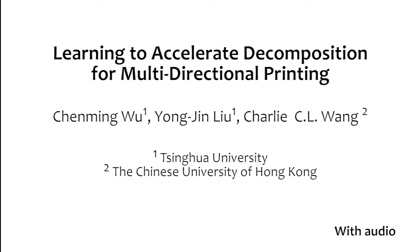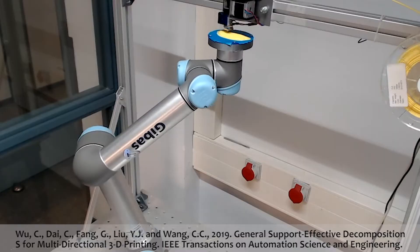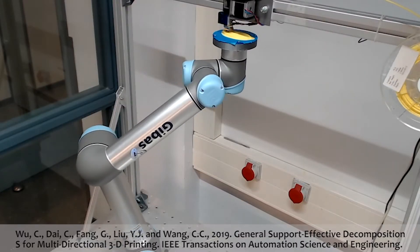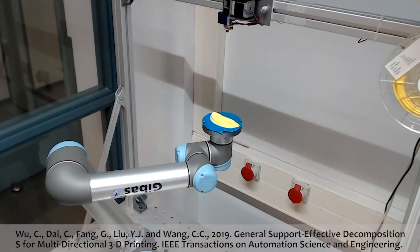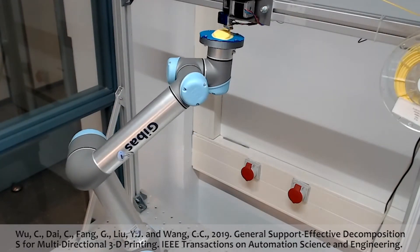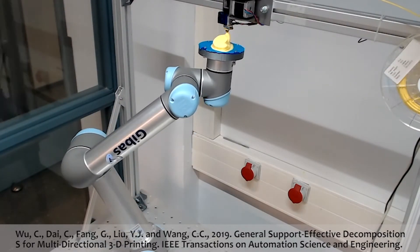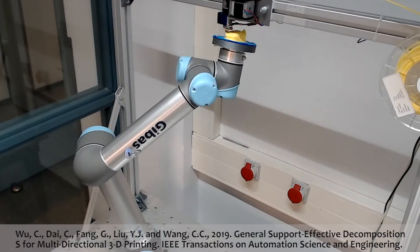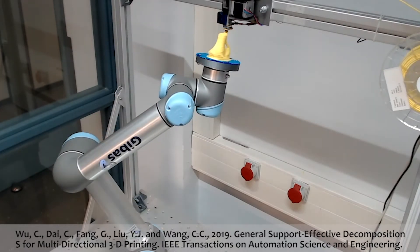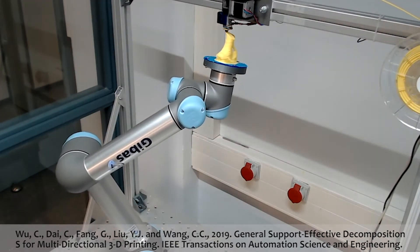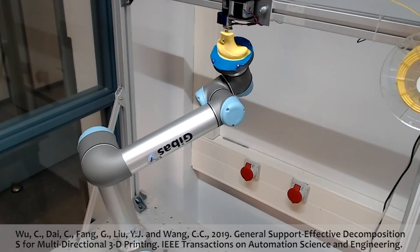In this paper, we present a learning framework to accelerate decomposition for multi-directional printing. As a strong complementary of additive manufacturing, multi-directional 3D printing has the capability of decreasing or eliminating the need for support structures.